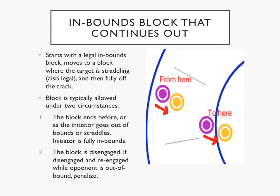Next is a legal block to an opponent inbounds that continues out of bounds. Fair warning: this idea was taken out of the rules, but it was not replaced with contradictory information, so I've still taken it as a matter of impact, similar to the idea of relative position. Relative position was also removed from the rules, but that doesn't mean you can't backblock an opponent to get your jammer through a wall. The illegal action is there; the impact is a teammate taking advantage of it. There's just no need to enumerate every single instance of it anymore. So in this case, you have a legal block inbounds, a continued legal block as the opponent is moved into a straddling position and then fully off the track.